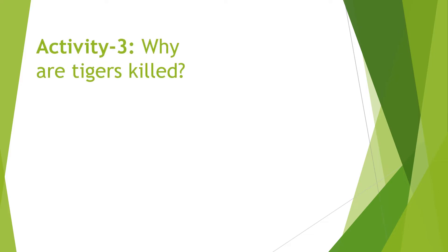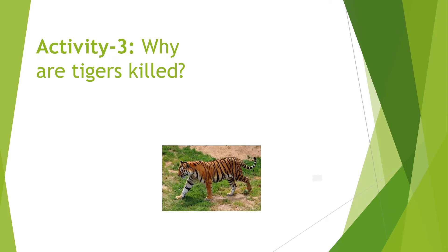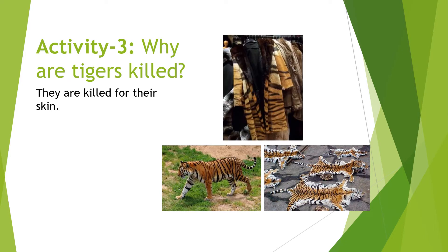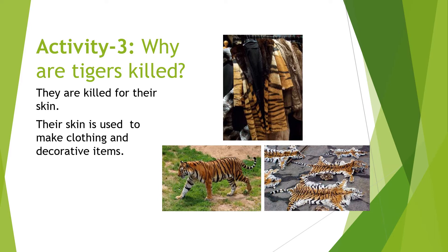Let us do the third activity, where you have to observe the pictures and answer the question: why are tigers killed? Please see this picture of the tiger. You have seen the part of this tiger where the skin has been taken out from the animal. From this observation, you can conclude that they are killed for their skin. The skin is used to make clothing and decorative items. So tigers are killed for their skin.